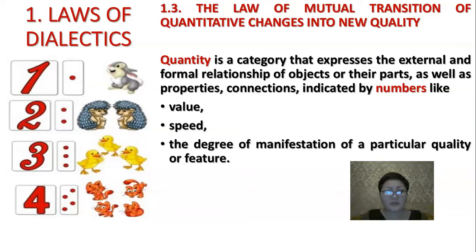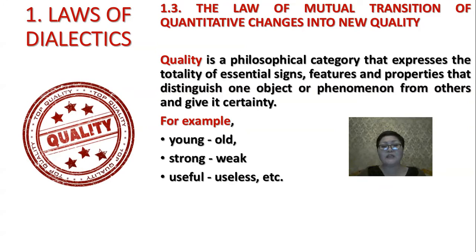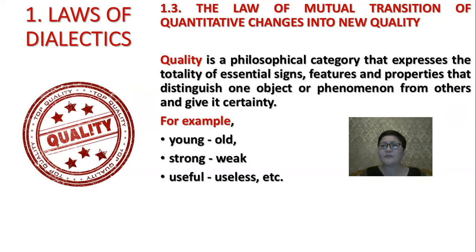What is quality? Quality is a philosophical category that expresses the totality of essential signs, features, and properties that distinguish one object or phenomenon from others and give it certainty. For example, by quality a rabbit is not a cat, and a cat is not a chicken, because they have their own quality. If quantity answers the question 'how many' or 'how much,' quality always answers the question 'what kind' — for example: young, old, strong, weak, youthful, useless, etc.